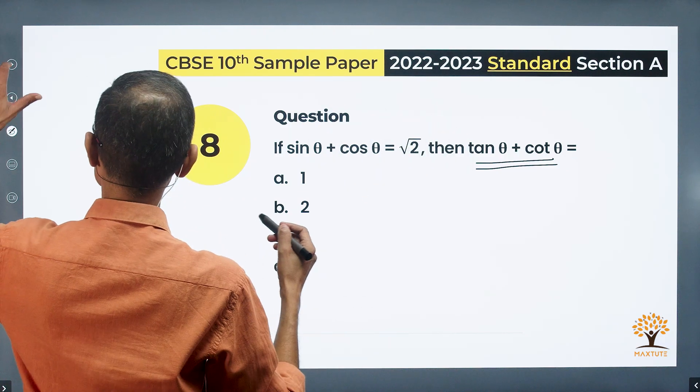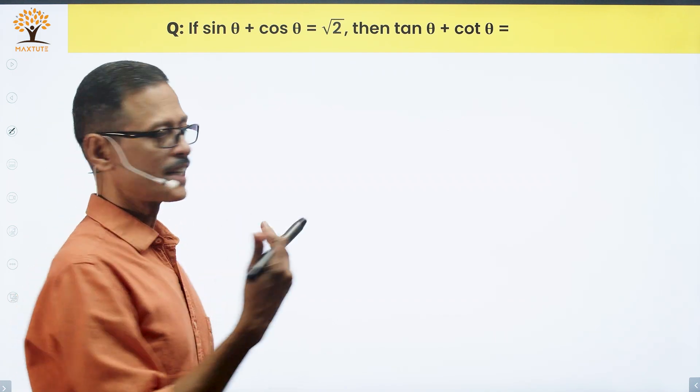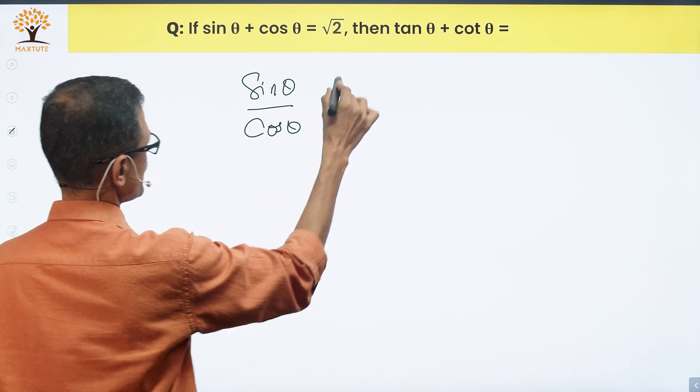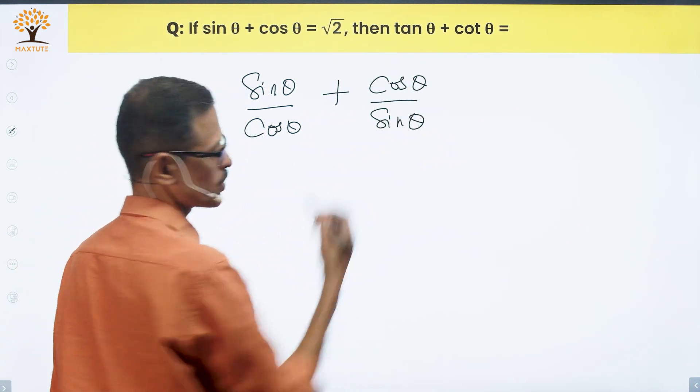We'll start with what we need to find out. I'm going to take this tan theta and cot theta and write them in terms of sin and cos. So sin theta divided by cos theta which is tan theta plus cos theta divided by sin theta which is cot theta.